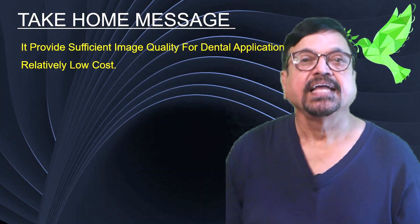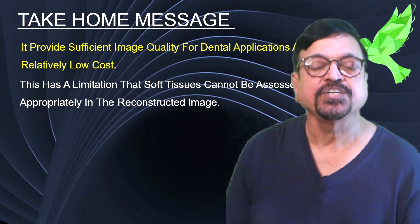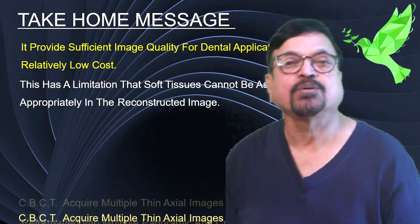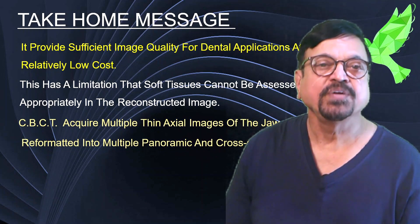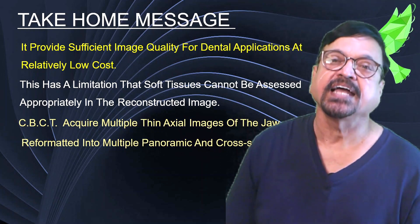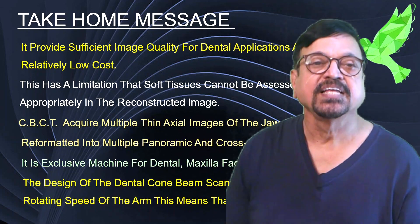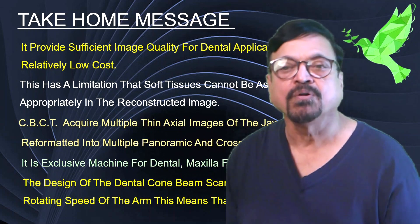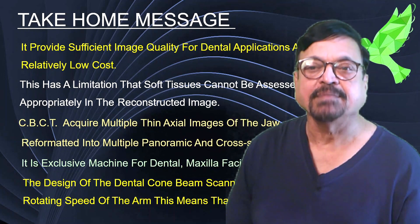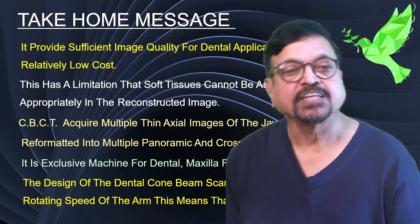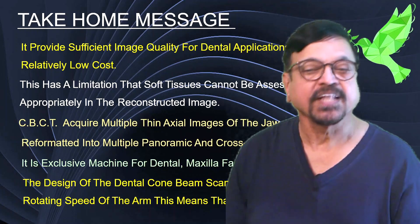Take-home messages: CBCT provides sufficient image quality for dental applications at relatively low cost. It has limitations regarding soft tissue, which cannot be visualized as well as bone. CBCT acquires multiple thin axial images of the jaw which are reformatted into multiple panoramic and cross-sectional views. It is an exclusive machine for dental and maxillary applications. The design of dental cone beam scanners limits the rotating speed of the arm, meaning rotation time is relatively long — it must rotate 360 degrees and does so slowly because it does not have slip rings like a conventional CT machine.